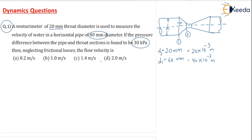If the pressure difference between the pipe and the throat section is found to be 30 kPa, pressure difference means P1 minus P2. Pipe and throat section P1 minus P2 equal to 30 kPa, must be converted into Pa.